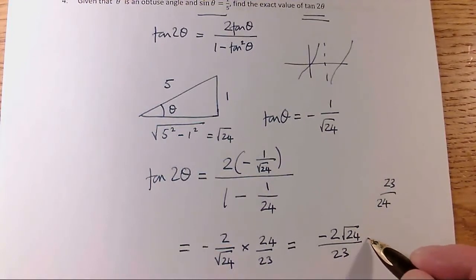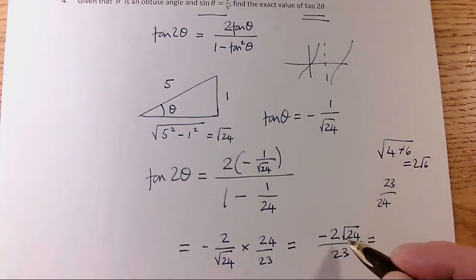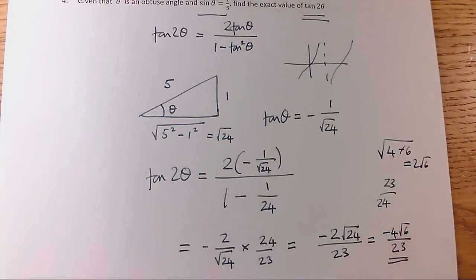Oh, and of course, √24 is, that's 4 times 6 in it, and √4 is 2, so √(4 × 6) is 2√6. So this is minus 4√6 over 23, if I want to give it in a simplified form, and of course my calculator would do that for me.